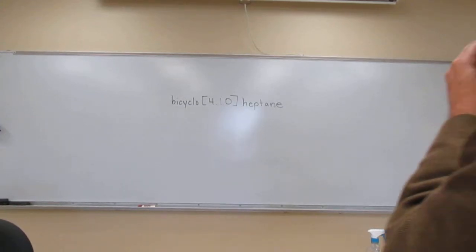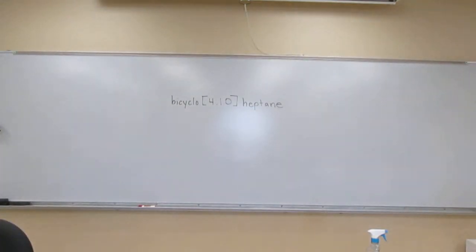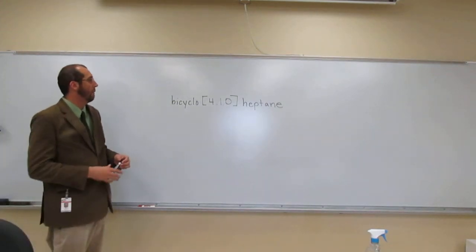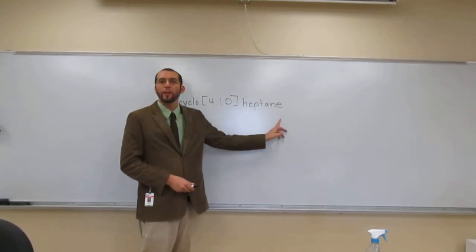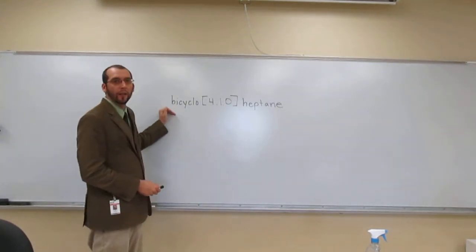Okay, so it looks like we're having a little more trouble taking the name and drawing the compound. The way I would do this, well first we know it's a heptane, so there's seven carbons in it, and it's a bicyclo.